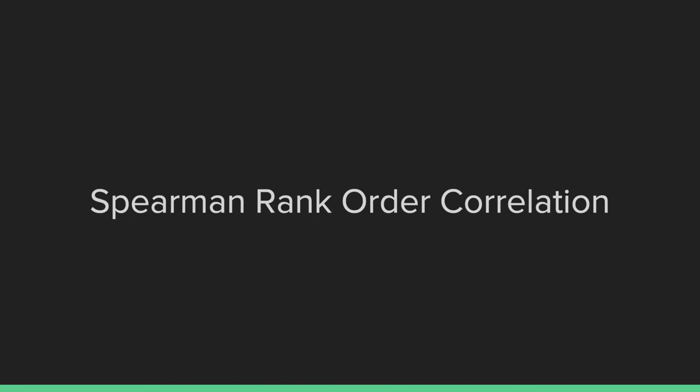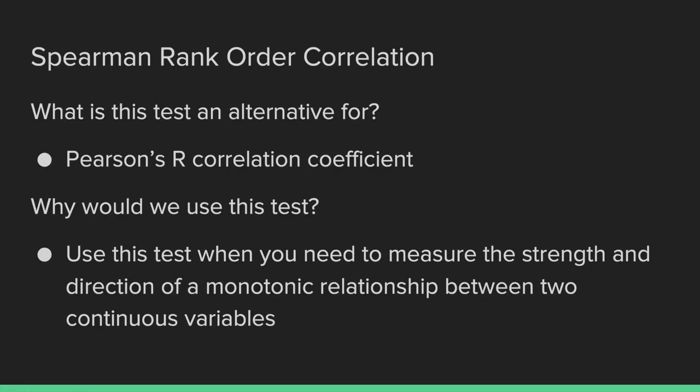The last test we're going to run today is the Spearman rank order correlation, which is the alternative for the Pearson's R correlation coefficient. There is also another alternative called Kendall's tau, but due to time we won't be exploring that here — it will be in your SPSS guide and can also be found in Field's book. The Spearman rank order correlation measures the strength and direction of a monotonic relationship between two continuous variables, whereas a Pearson correlation measures a linear relationship.